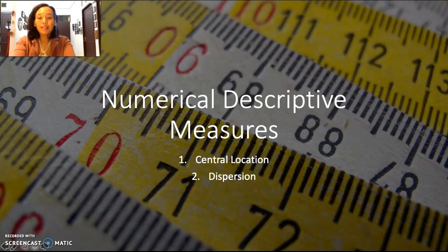The first one is central location. Here we calculate and find the central value of our data. The second one is dispersion. It measures the spread and the distribution of our data.